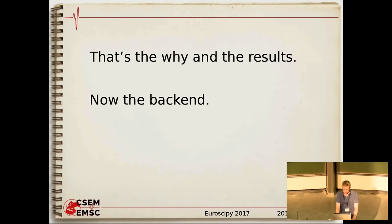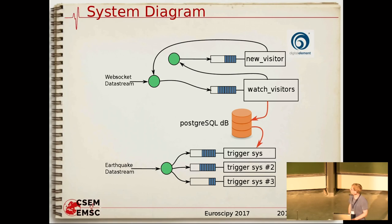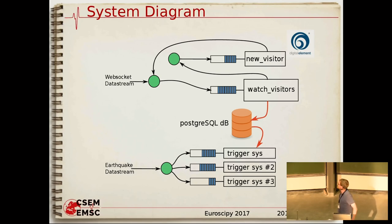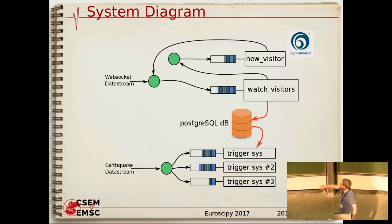Now I'll talk about how I implement this, because everything has to happen in real time. My system is a series of Python processes tied together with RabbitMQ, a messaging system. The green circles are RabbitMQ exchanges. We have a WebSocket server that sends a message every time a web page is opened or closed. It goes to a watch-visitors process, which turns that information into sessions for visitors. When a new session starts, we use the new-visitor process to analyze it — that way we don't get any slowdown on our main process and can stay in real time.